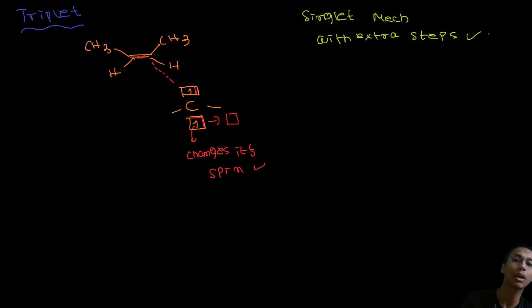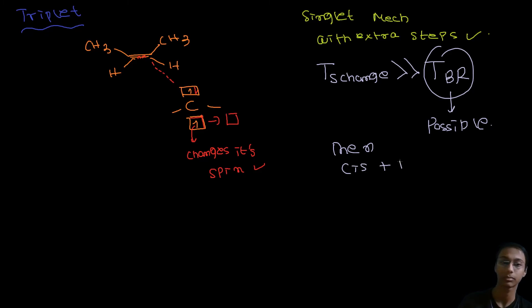And when does the spin change occur? When this transition state happens. So what do we take away from this? Time taken for spin change is much greater than time taken for bond rotation. That is why this is possible now. And if this is possible, then both cis and trans would be formed. So that was basically our example on the basic reactions. Examples I will show you now.